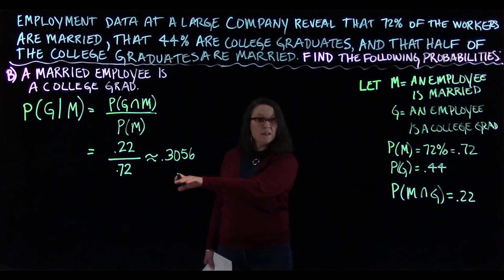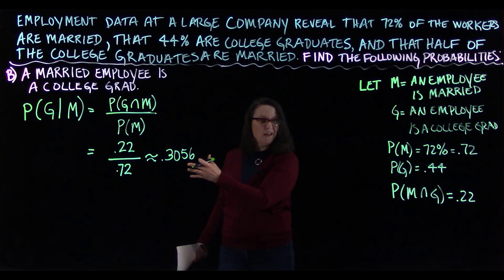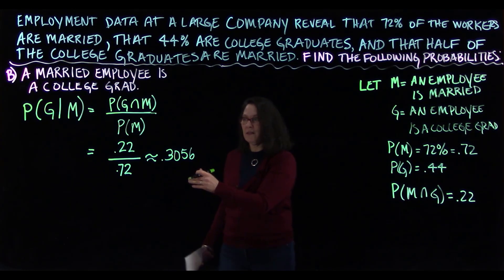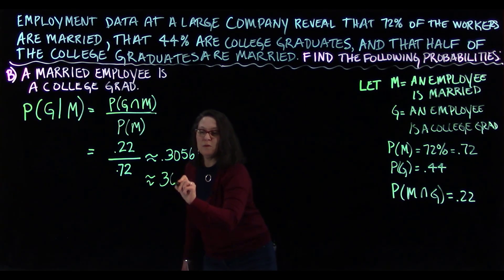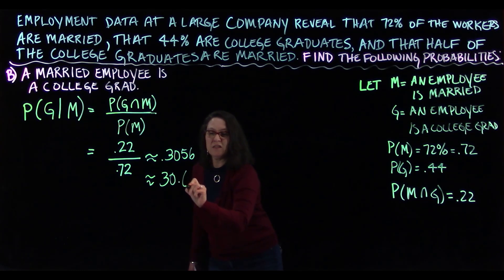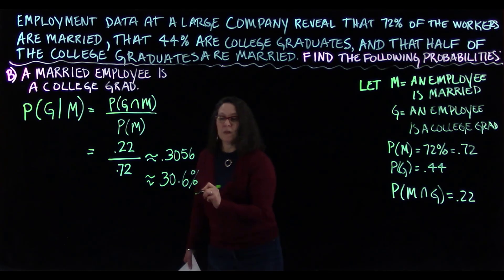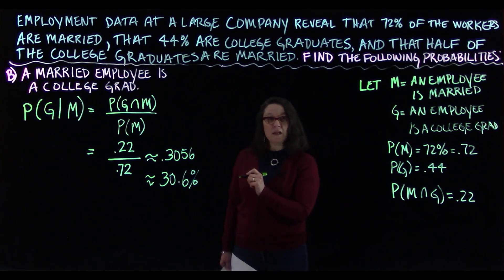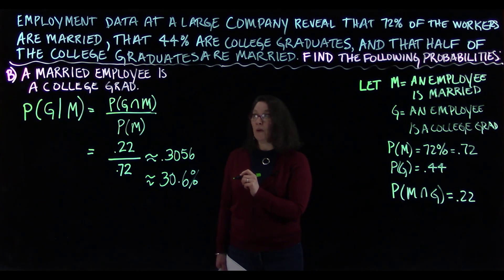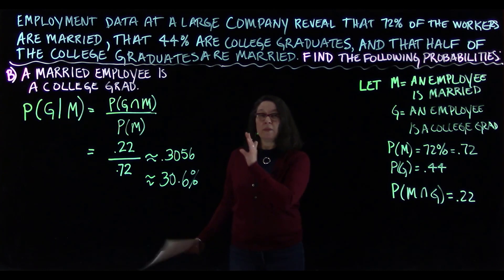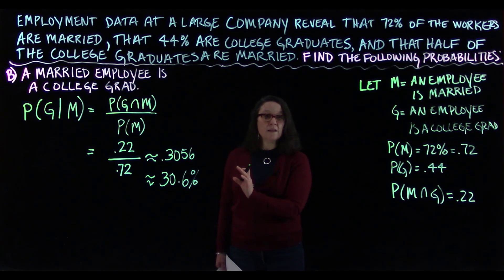If writing this as a percentage, which is easier to interpret, rounding to the nearest tenth gives approximately 30.6%. So there's a 30.6% chance that, out of the married employees, the employee is a college graduate.